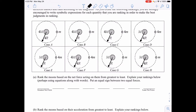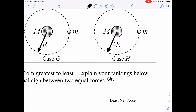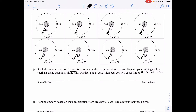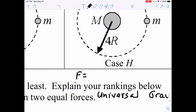Part A: Rank the moons based upon the net force acting upon them from greatest to least. For net force, if we're talking about the net force between two objects, this is a universal gravitation problem. The normal equation we would use is F equals big G — the universal gravitation constant of 6.67 times 10 to the negative 11 — times mass 1 times mass 2, divided by the distance between the center of the masses squared.